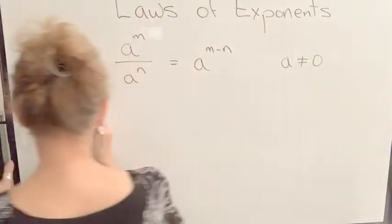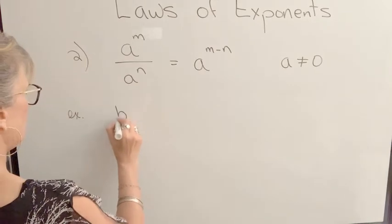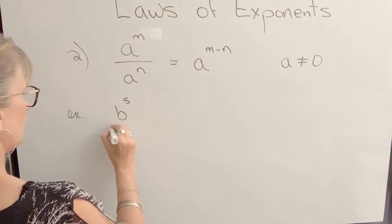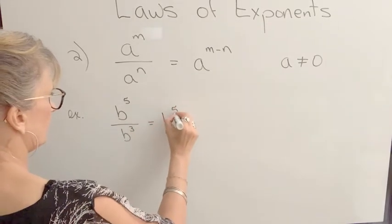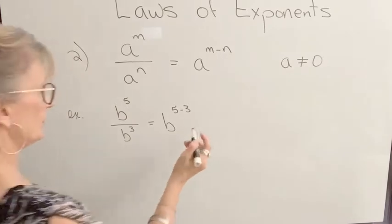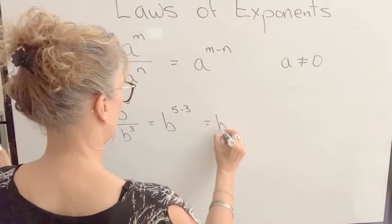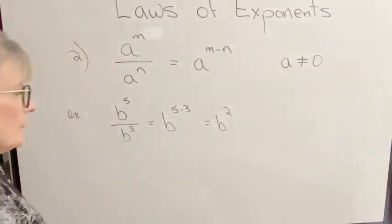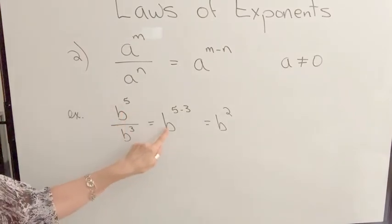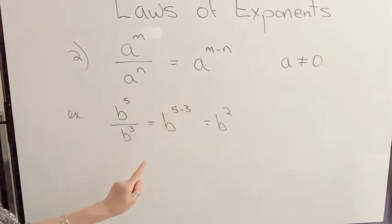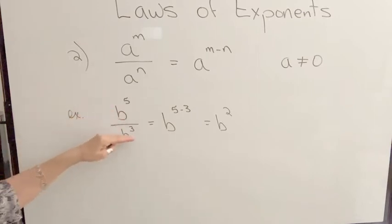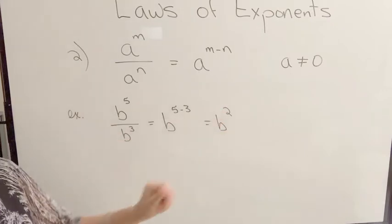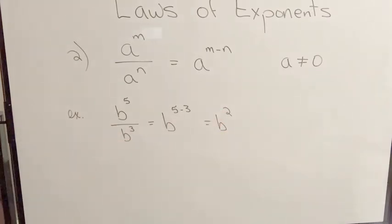So for example, if I had B to the 5th power divided by B to the power of 3, the result will be B to the 5 minus 3, which is B squared. And again, I could put out my 5 B's, divide by the 3 B's, and the 3 of the B's will cancel, and you'll be left with 2 B's in the numerator. So that's just an illustration of that rule.